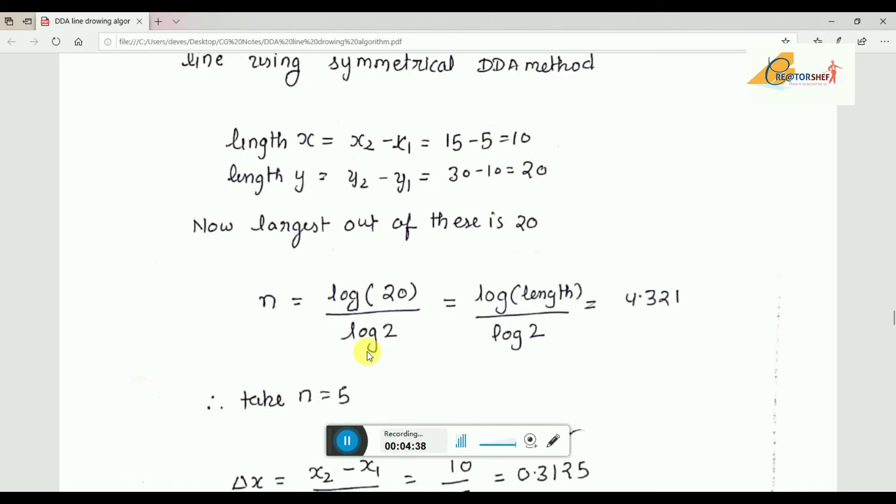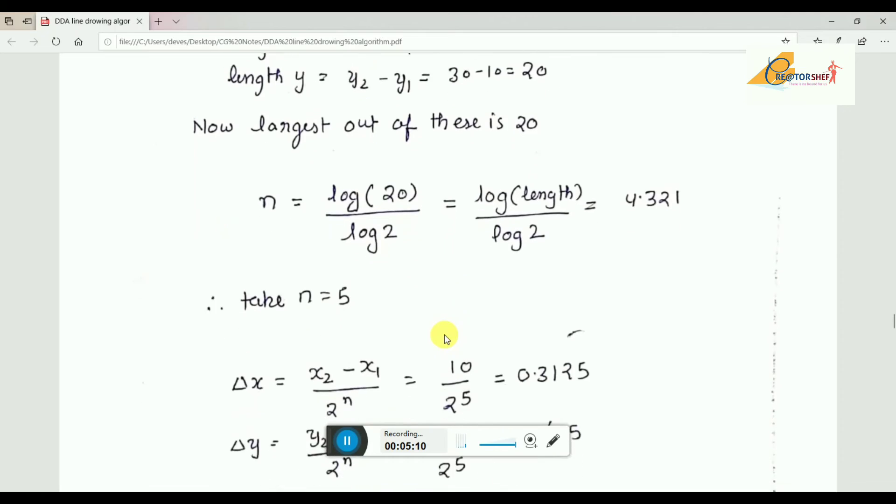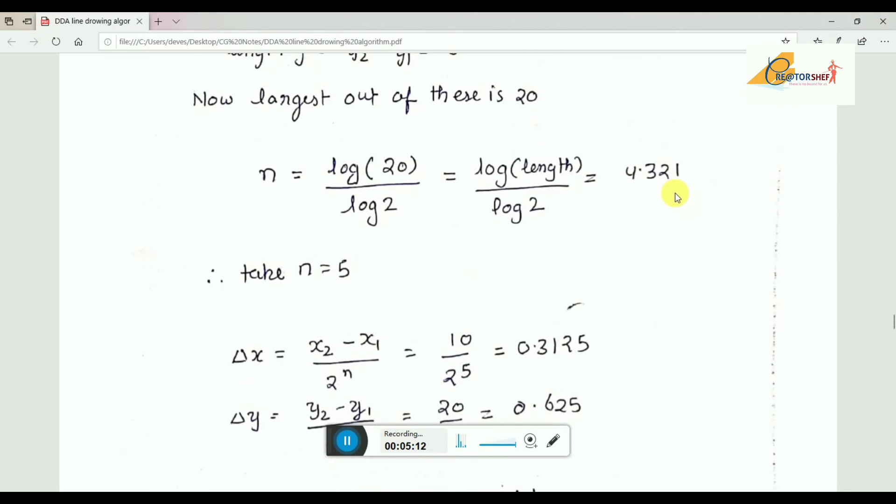What is n value? n = log₂(length). Log base 2 of the length. So n = log₁₀(20) / log₁₀(2). What we get here is 4.321.